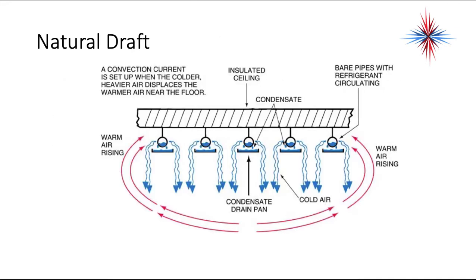When we use a natural draft evaporator, we have tubes with refrigerant in it, pans to catch the condensate, and we rely on the natural airflow — warm air rises, cold air drops — to cool the space. This is used a lot in cold storage warehouses. It's older systems; you do not see it much in comfort cooling — actually, very rarely in comfort cooling.